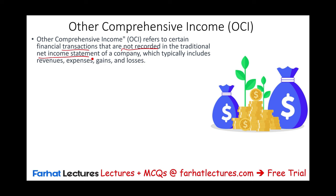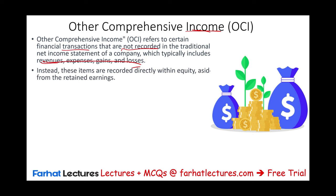You might think there should be only an income statement, but these items skip it. So other comprehensive income is none of those — revenues, expenses, gains, or losses. Instead, these items are recorded directly within equity, next to retained earnings. They are a separate item on the equity statement.